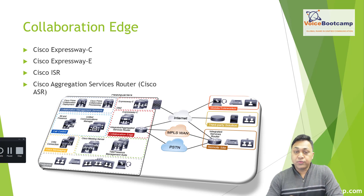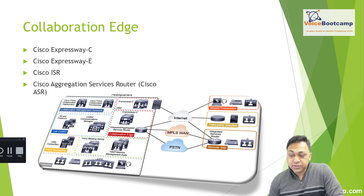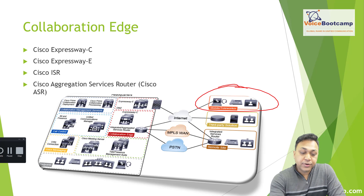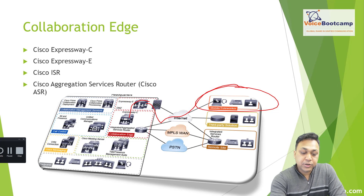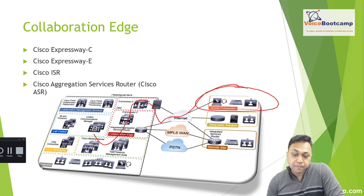Collaboration edge allows users from outside to register devices to call control devices inside your firewall. It provides remote registration services, external communication, and interoperability. For example, employees working from home can use the internet to connect through Expressway E, and then via Expressway C, register to the Call Manager internally as if they are inside the organization.